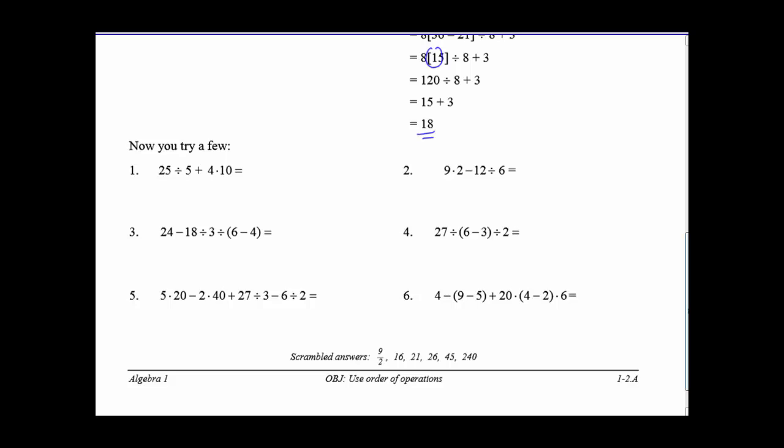So we're going to try a few. Number 1, do we have parentheses? We do not have parentheses. Do we have any exponents? We do not have any exponents. We do have multiplication, division, and addition. So going from left to right, multiplication comes first, and division. We're going to divide there, skip the plus, and we're going to multiply here. So we're going to go 25 divided by 5 gives us 5, and then we go 4 times 10 gives us 40. So now when we go 5 plus 40, we know we get 45.